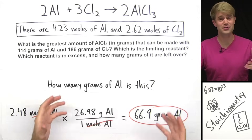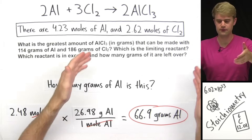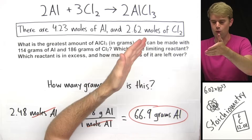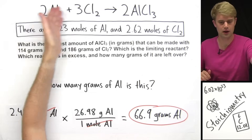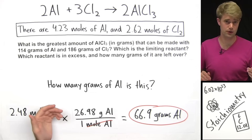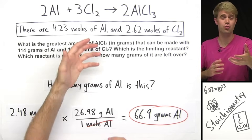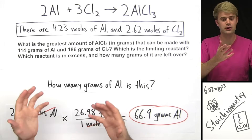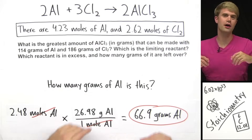That's how to solve a rather challenging limiting reactant problem. The first thing you've got to do is figure out which is the limiting reactant, and make sure the numbers you plug into the equation are always in moles. After that, it's just a matter of figuring out which reactant you run out of first and using the amount of limiting reactant to figure out how much product you can make.